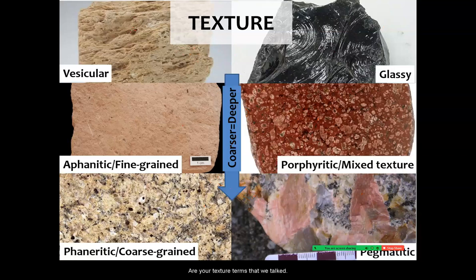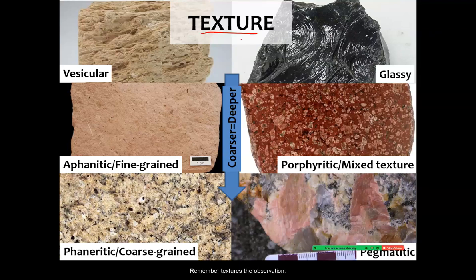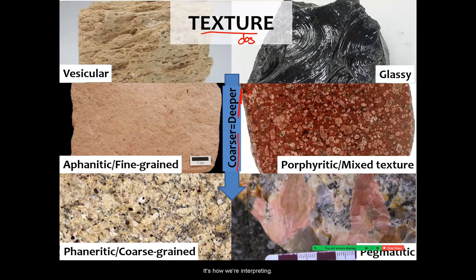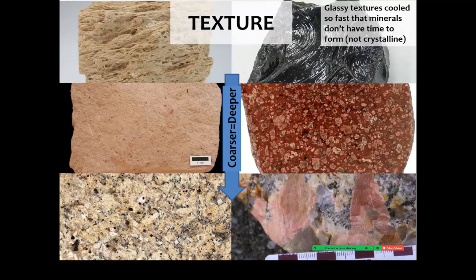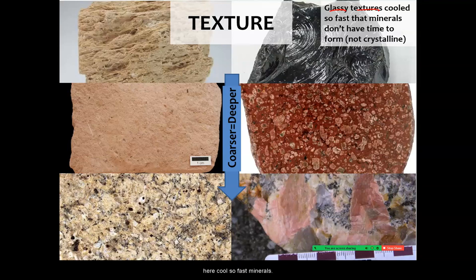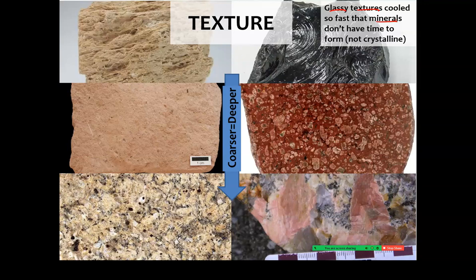Remember, texture is the observation; coarser is also an observation. Deeper is how we interpret that, based on the physical processes we've talked about — the fact that cooling speed is controlled by depth. In glassy textures like obsidian, the rock cooled so fast that minerals don't have time to form. The liquid cools so fast that the very disorganized atomic structure just freezes right where it is — that isn't a crystal because the atoms haven't had time to organize themselves.